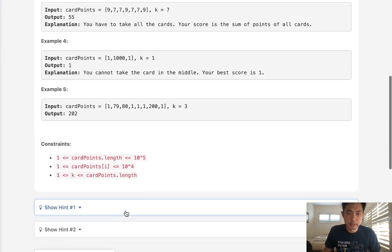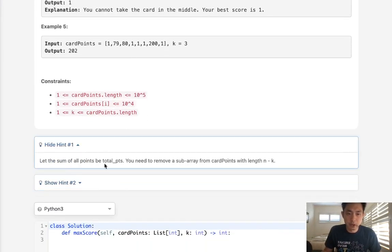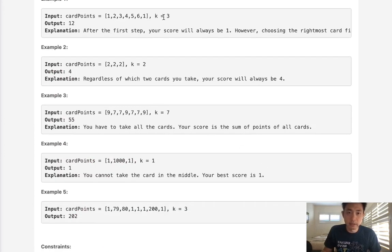Let the sum of all points be total points. You need to remove a subarray from the card points with length n-k. That makes sense, right? We have to take three cards, so whatever remains here is going to be some subarray that's contiguous or continuous. So what's the idea here? We want to minimize whatever the sum of this remaining subarray is. If we can minimize that, then we know what the maximum is.